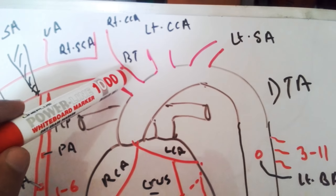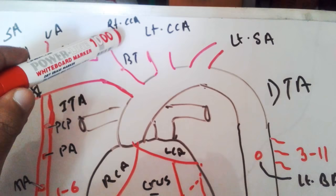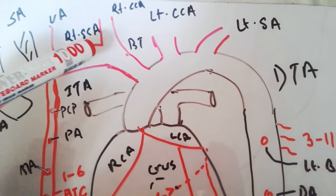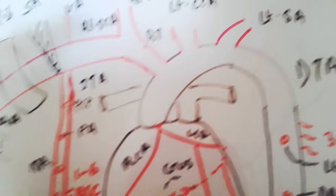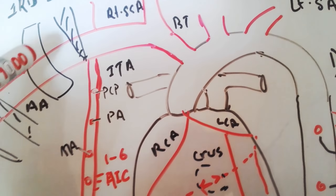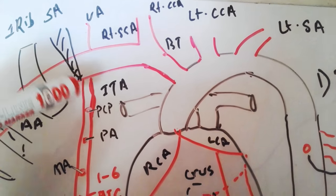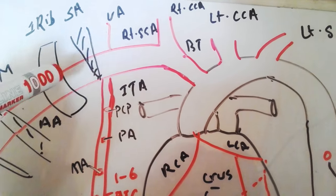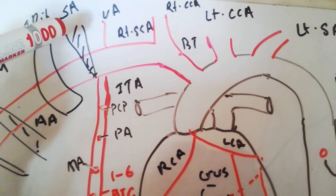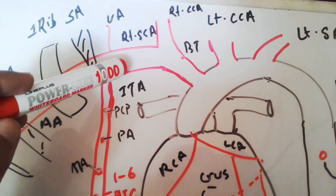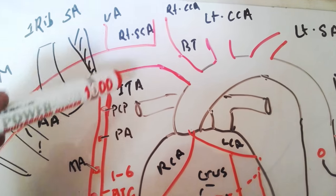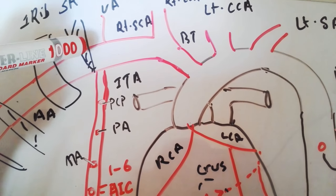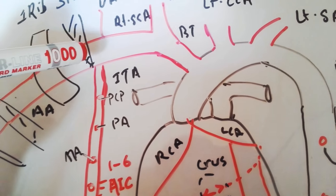The brachiocephalic trunk has two branches: the right common carotid artery and the right subclavian artery. The subclavian artery has three parts, divided by the scalenus anterior muscle. The first part has three branches: vertebral artery, internal thoracic artery, and thyrocervical trunk. The second part gives the costocervical trunk, and the third part gives the dorsal scapular artery.